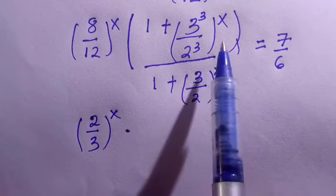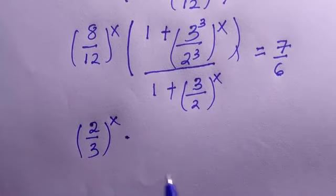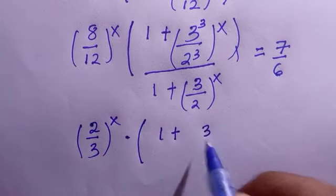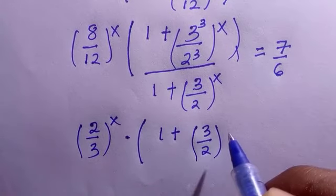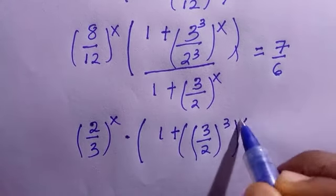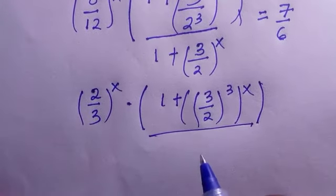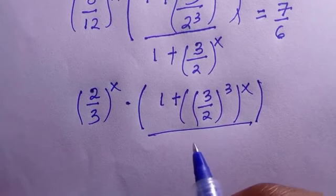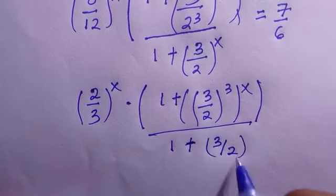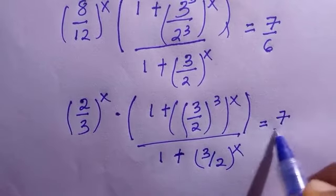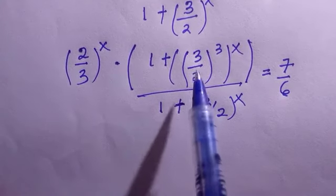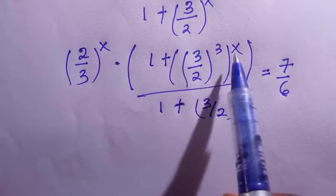So we have 3 divided by 2, raised to everything to the power of x. Divided by 1 plus 3 divided by 2, all raised to power x, equals 7 divided by 6. Looking at this, where we have 3 divided by 2 raised to the power 3, all raised to power x, we can switch that to 3 divided by 2 raised to power x, and all raised to power 3.